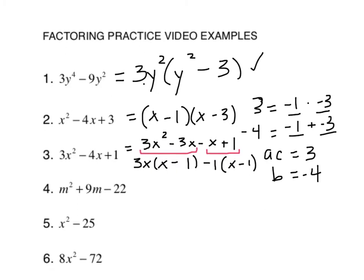And then remember what we have here. We have 3x times x minus 1 minus 1 times x minus 1, which is the same thing as 3x minus 1, the whole thing, times x minus 1. Again, if you're taking a quiz or a test, I would encourage you to go ahead and multiply that out and double check your math.